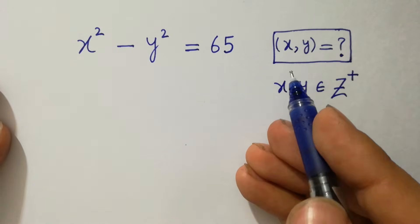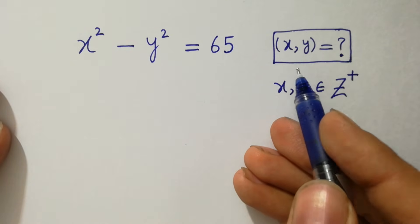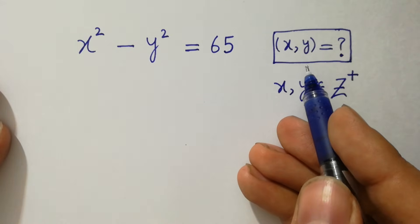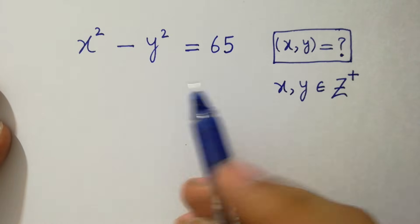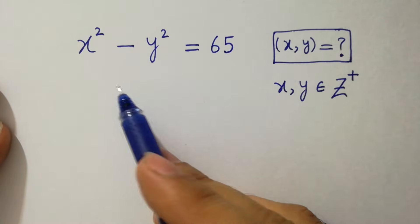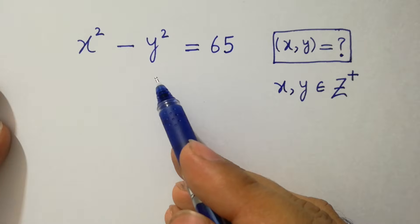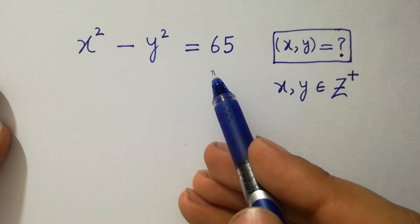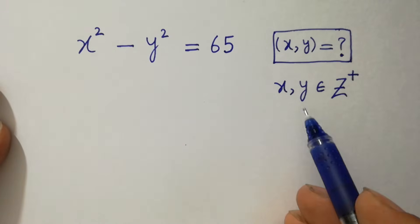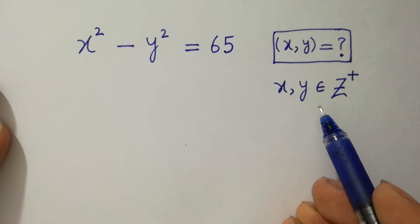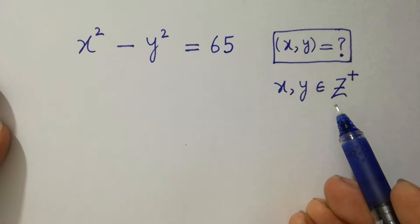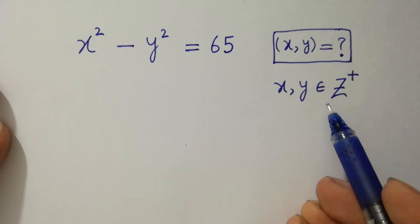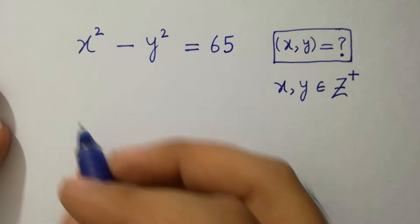Hello friends. Find the value of x and y if x squared minus y squared equals 65, where x and y belong to positive integers. Let's have a solution.